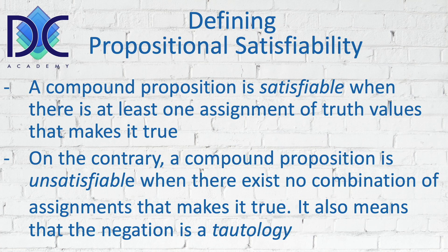When a proposition is unsatisfiable, there is no combination of assignments that makes it true. It means that all outputs of the truth table are false. This is in fact the negation of a tautology — because a tautology means it's all true. No solution? Then we call it unsatisfiable.